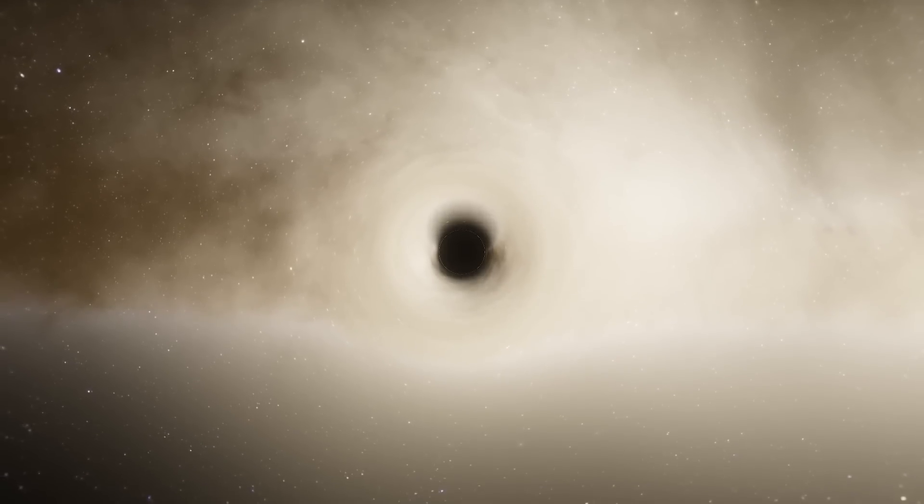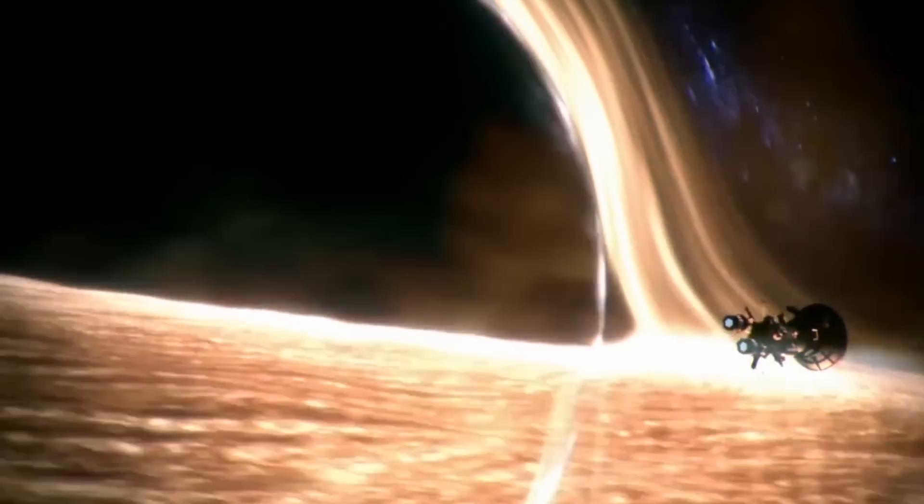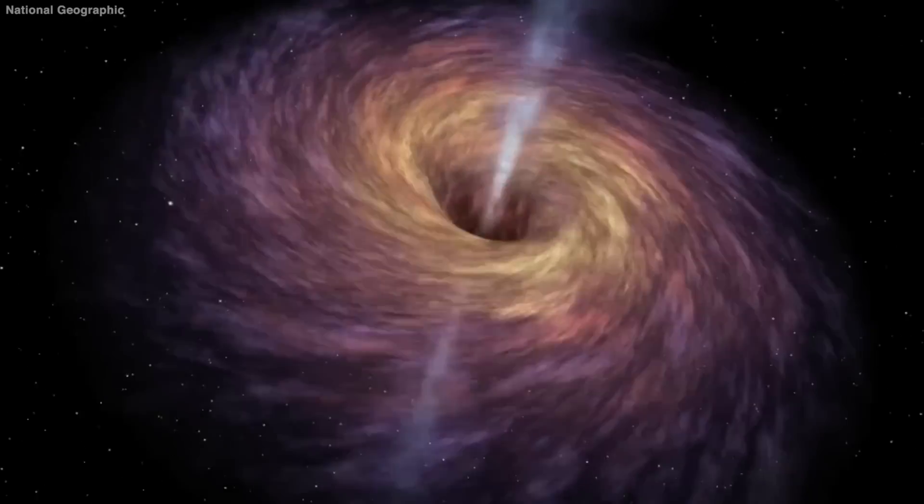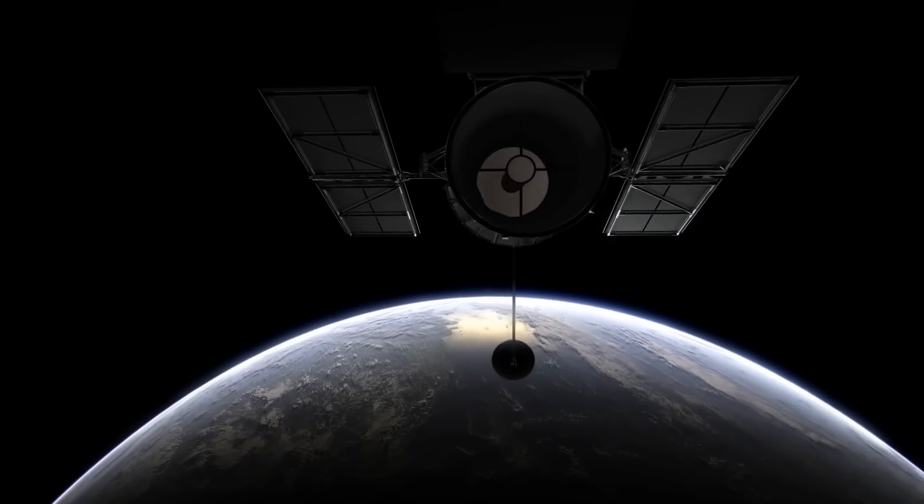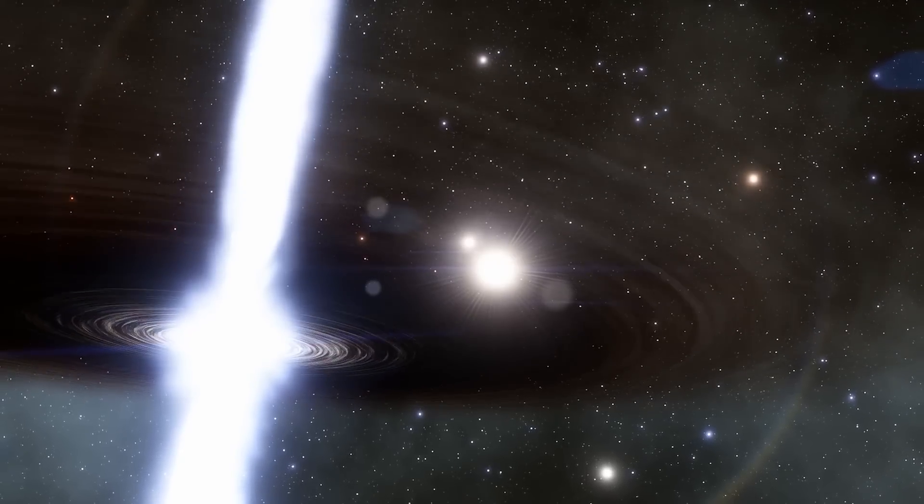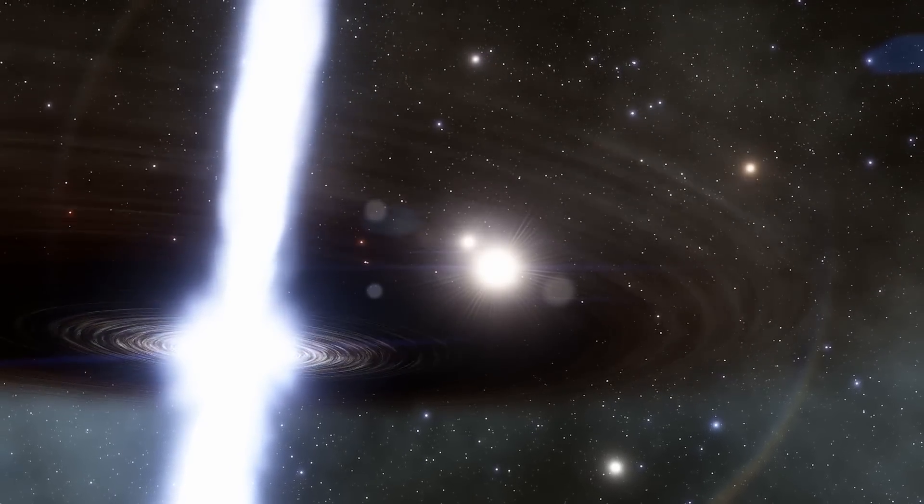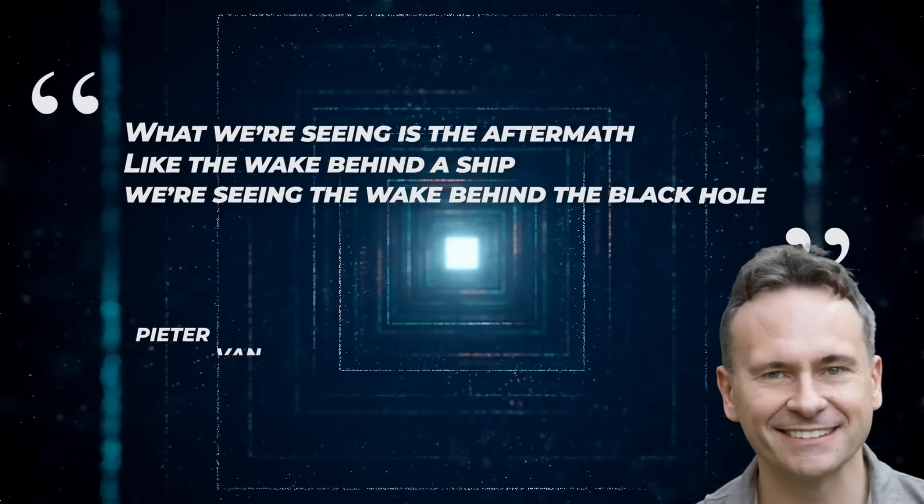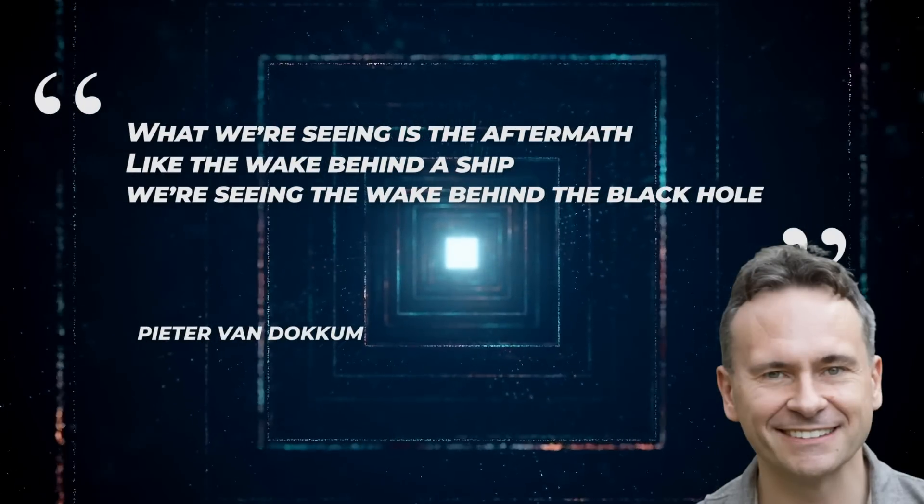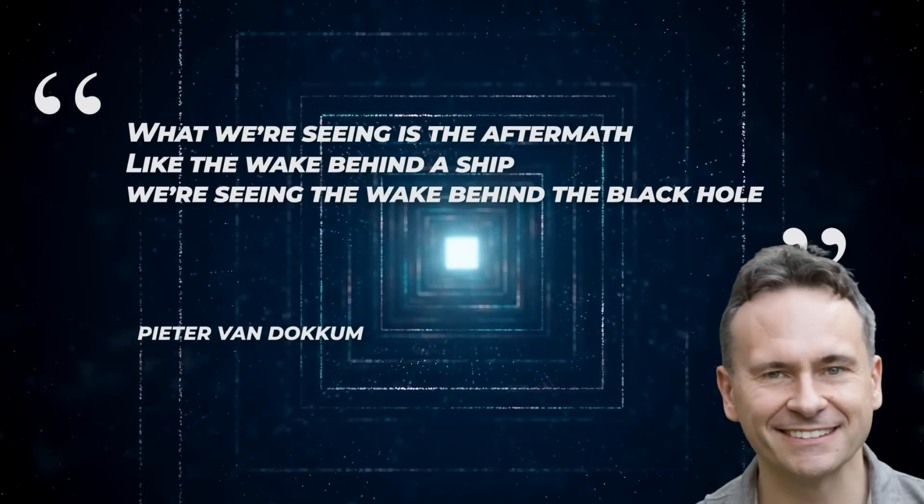Scientists are still puzzled about why this black hole is behaving so differently from others, but a team led by Yale astronomy professor Peter van Dokkum recently reported their findings in the Astrophysical Journal Letters. NASA's Hubble Space Telescope also confirmed these observations, with Dokkum's research suggesting that the black hole sparks new stars into life when it comes into contact with gas and cools it down. What we're seeing is the aftermath, Dokkum said. Like the wake behind a ship, we're seeing the wake behind the black hole.